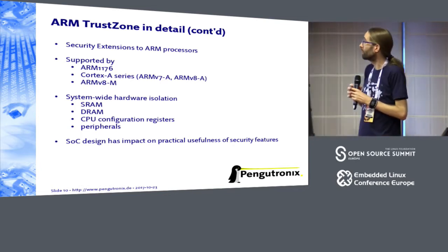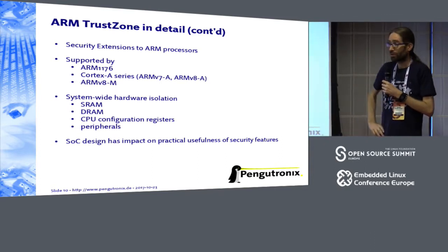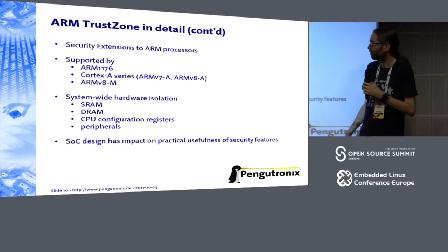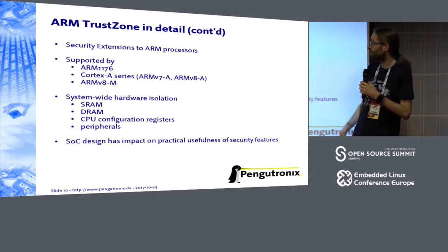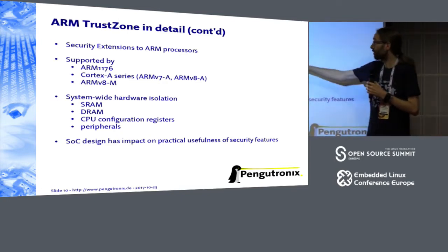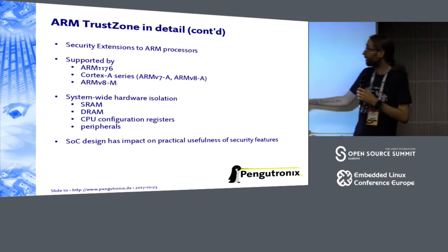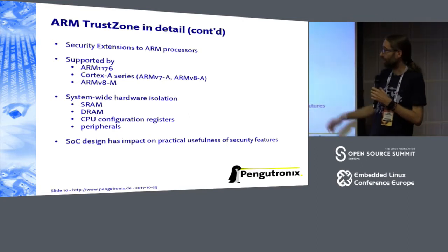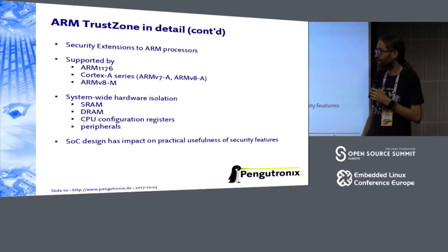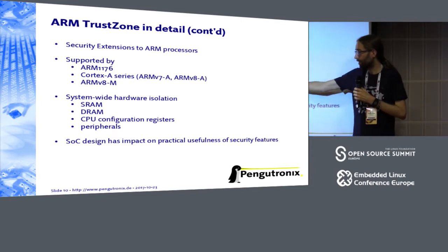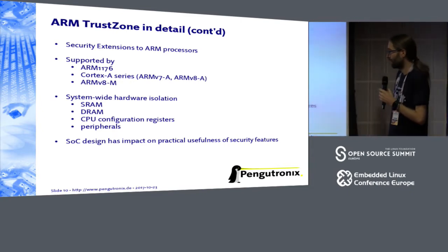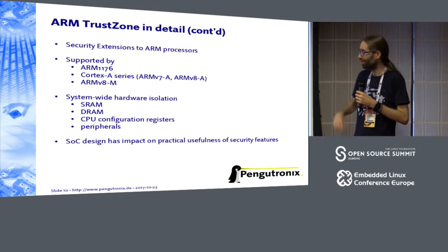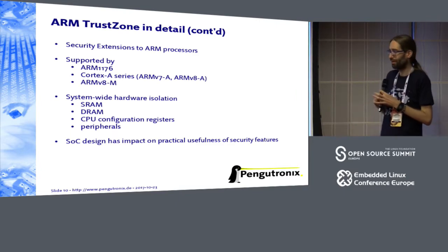The system designer, when using TrustZone, can partition software and hardware between both worlds. How peripherals can be switched between worlds truly depends on what the SOC implementer has done — it's not specified by ARM, it's up to the SOC vendor. Some peripherals know from which world they are called, and some do not. The practical usefulness really depends on how well the TrustZone support was implemented by your SOC designer. TrustZone is a security extension supported since ARM 11, and it's on the Cortex-A series in 32-bit and 64-bit, plus a new implementation for microcontrollers. You have system-wide hardware isolation covering SRAM, DRAM, CPU configuration registers, and some peripherals.